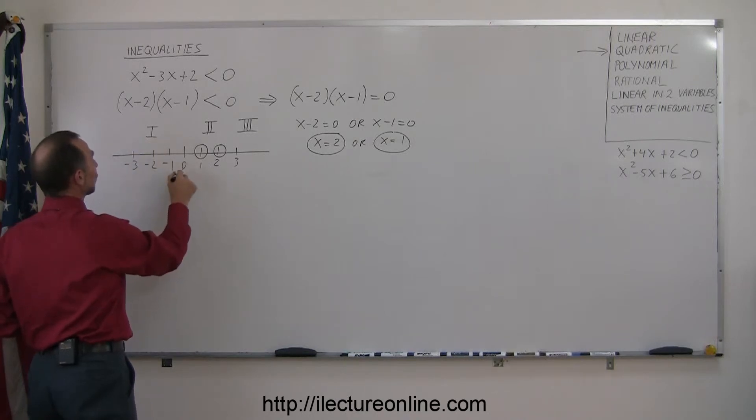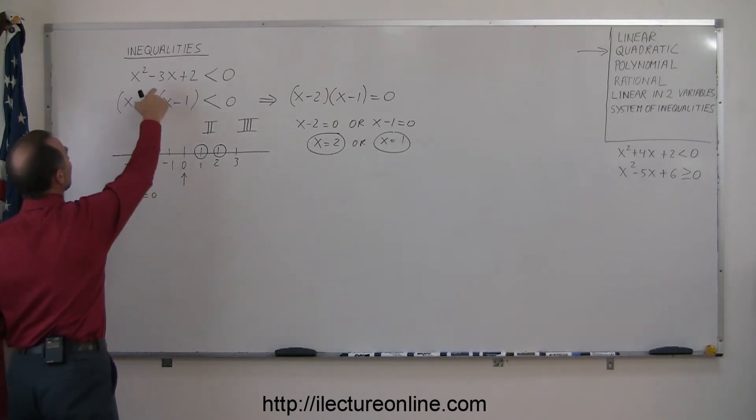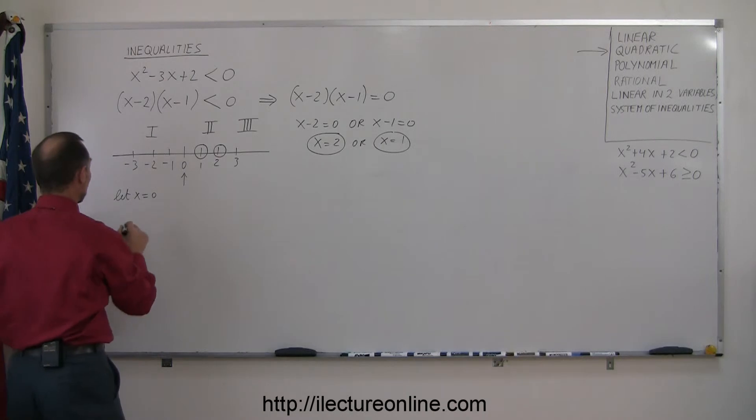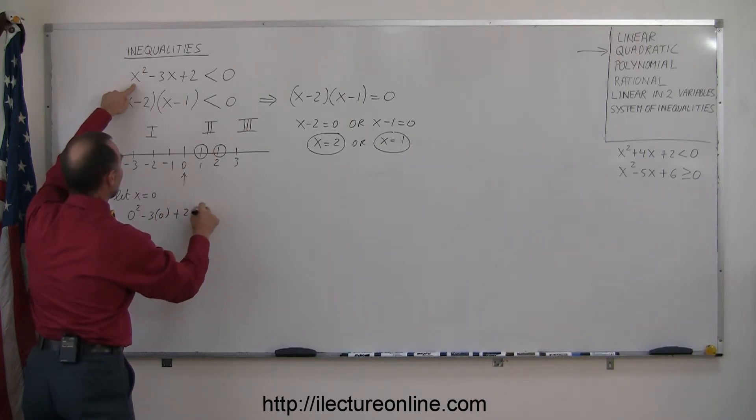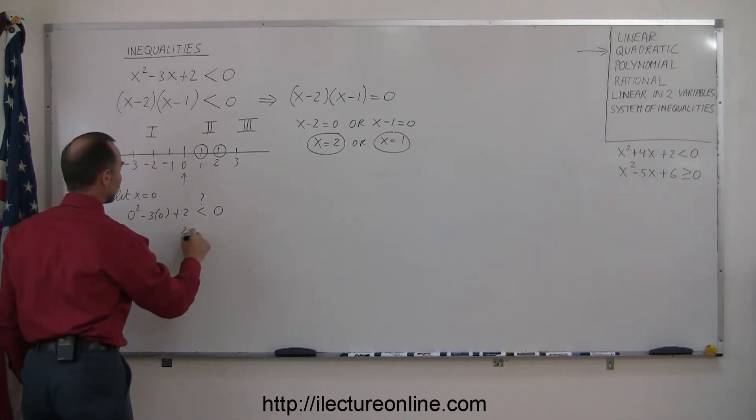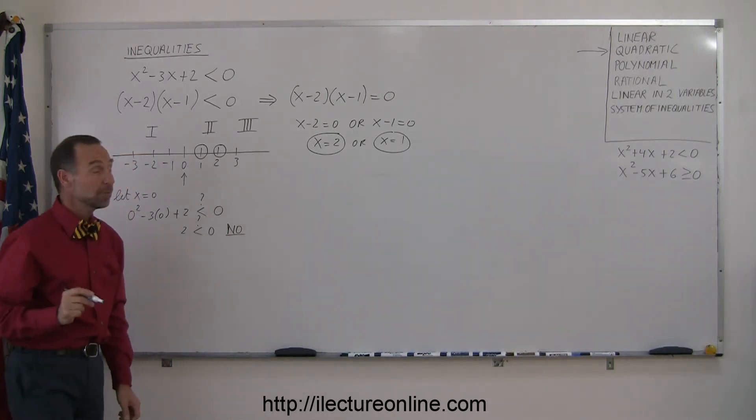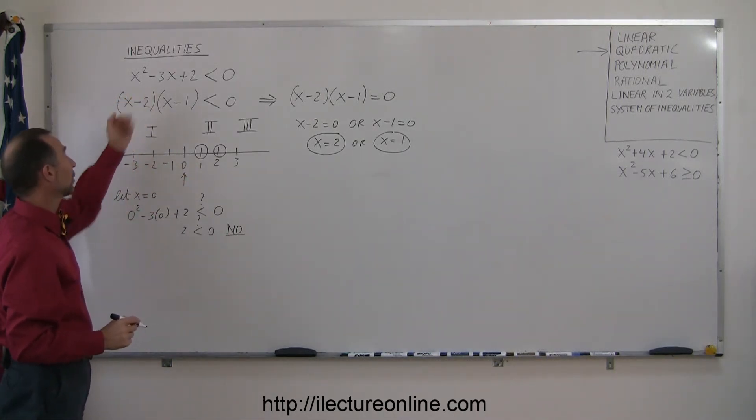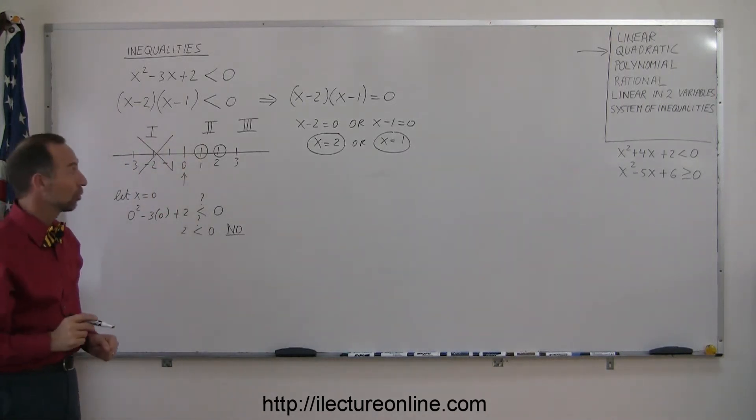So let's start with region 1, and we're going to try point 0. So let x = 0, and plug that into the inequality to see if that makes that a true statement. So now we have 0² - 3(0) + 2, is that less than 0? And obviously, if this is 0 and this is 0, we have 2 < 0, and that, of course, is no. Which means I picked a point in a region that does not belong to the solution, so I can go ahead and eliminate that as a possible solution.